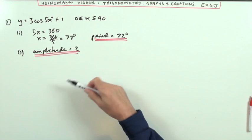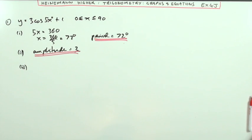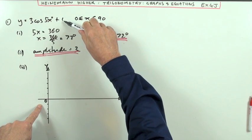The third part says sketch the graph, so I need a set of axes. I'll draw that one. First of all, instead of the cosine oscillating about the x-axis, it's going to oscillate about a line which is one higher up.